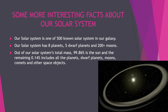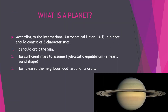Comets, asteroids, meteoroids, etc. Our solar system has eight planets, five dwarf planets, and 200 plus moons, and even lakhs and lakhs of asteroids and meteoroids. First of all, let us clearly understand what actually is a planet.